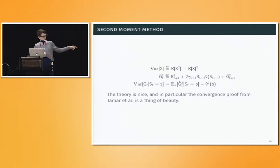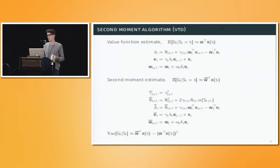They define a new approximation target for learning the second moment, and then they just compute the variance by using this new thing that they've learned minus the square of the value function. It's very nice in terms of the math, and the Tamar paper is particularly a thing of beauty, but in practice, it has some issues.